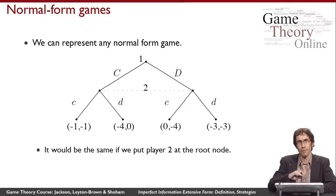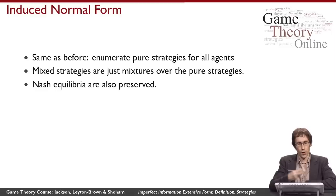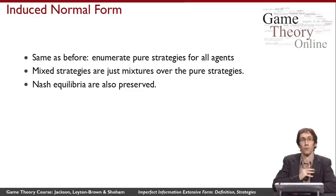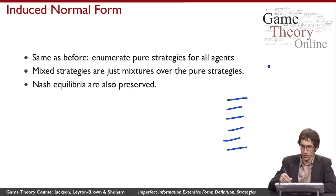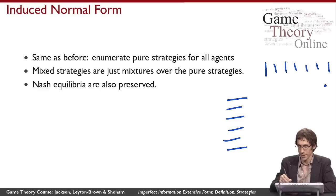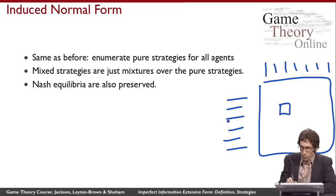Notice we could equivalently put player two at the root node and player one below, because time isn't really playing a role in this game. We can also go the other direction: start with an extensive form game and produce a normal form game. We take all pure strategies for player one as rows and for player two as columns, then fill in each cell with the payoff resulting from those strategy combinations.